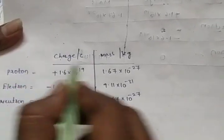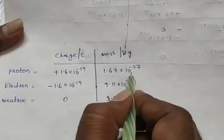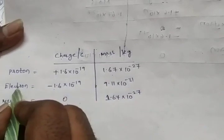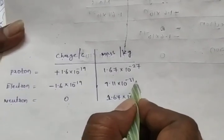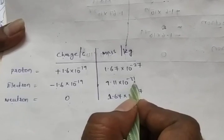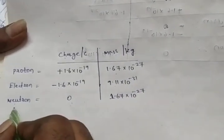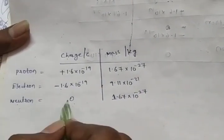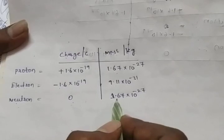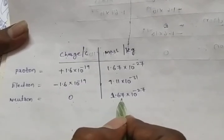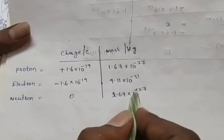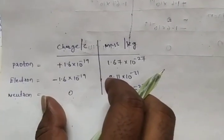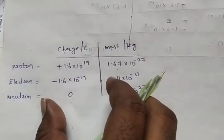So to summarize: proton has a positive charge, electron has a negative charge, neutron has zero charge. The proton mass is 1.67 into 10 to the power of minus 27, electron mass is 9.11 into 10 to the power of minus 31, and neutron mass is 1.67 into 10 to the power of minus 27. These are the three fundamental particles.